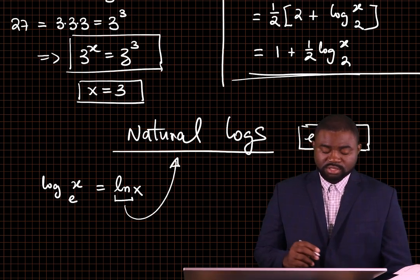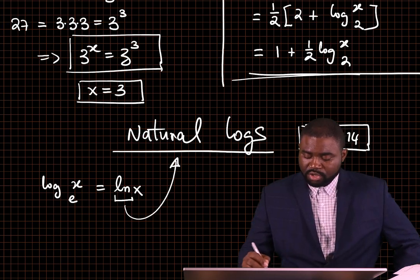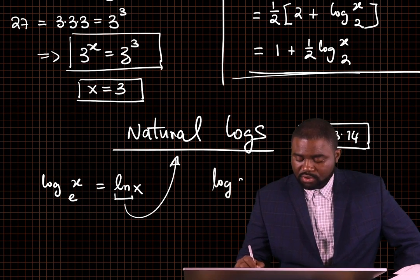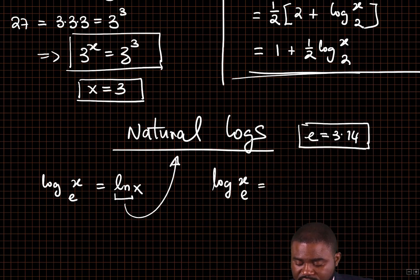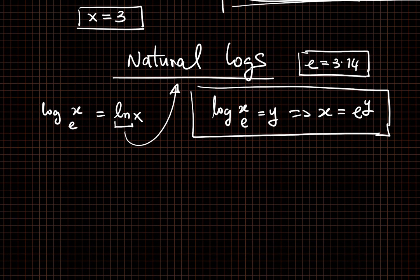Remember, ln is used to signify natural logarithms. So, for example, the natural log of X to base E, if that is equal to Y, then this means that X is equal to E raised to the power Y. That is just the definition that we gave above. That means that X is equal to E raised to the power Y.